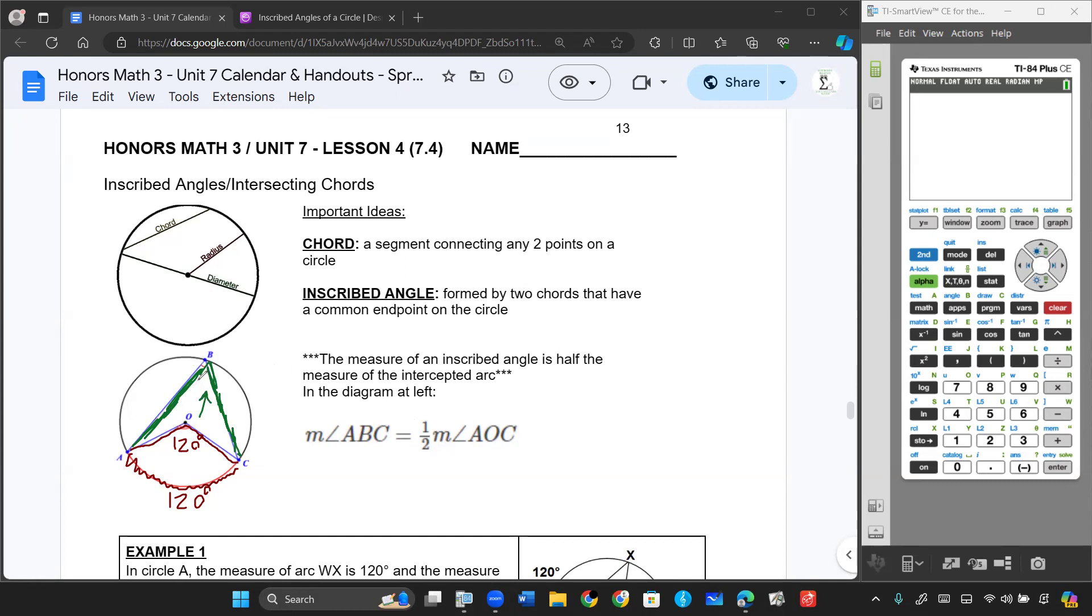Well, it turns out it's going to be half of the degree measure. So that angle over there is going to be 60 degrees if this were 120. So the inscribed angle is always going to be one half the measure of the central angle.